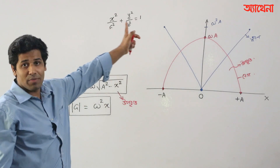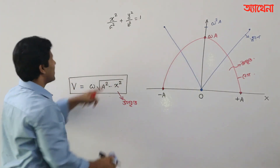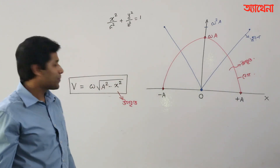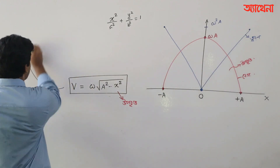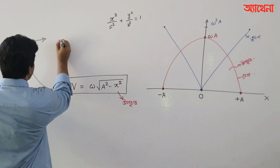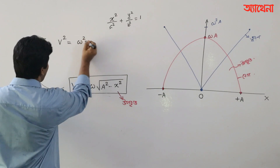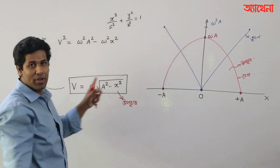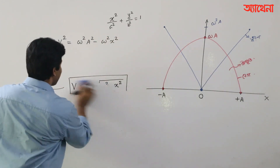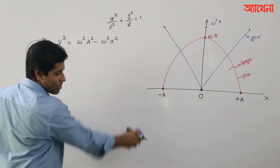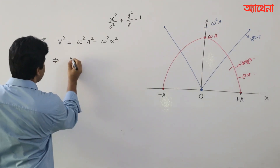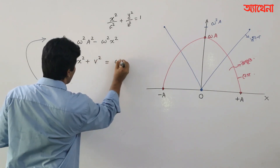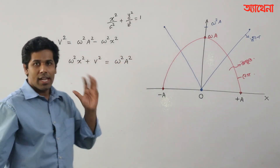We need to do that and see the equation from a right to a and b, so we need to write it. X squared plus v squared is equal to omega squared times a squared. So v squared plus x squared equals omega squared times a squared.